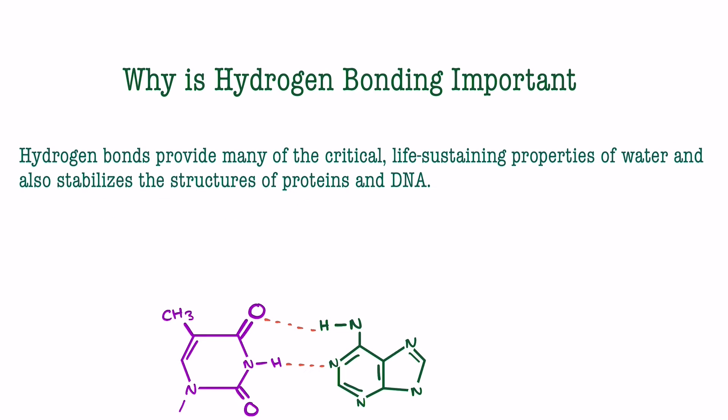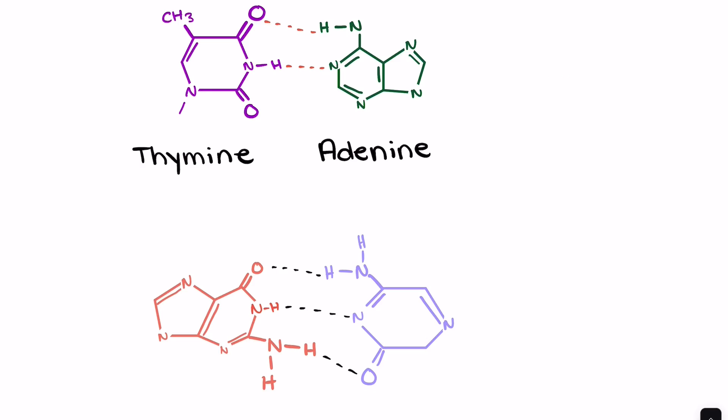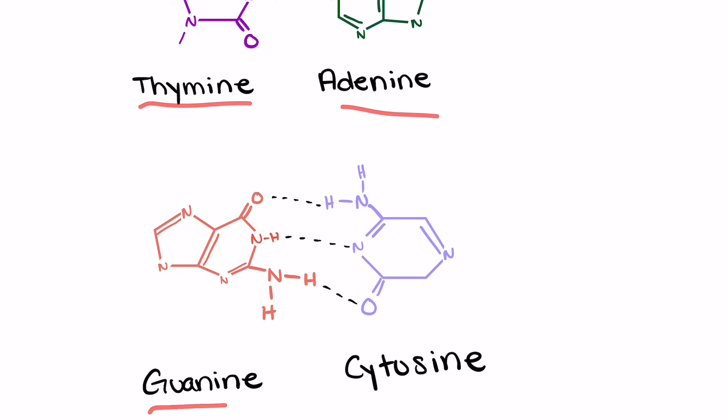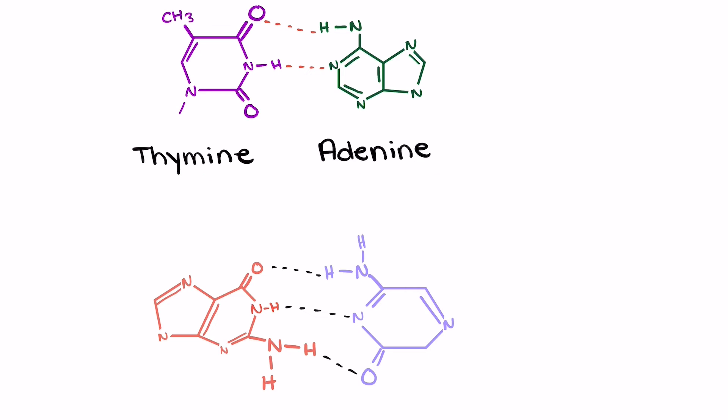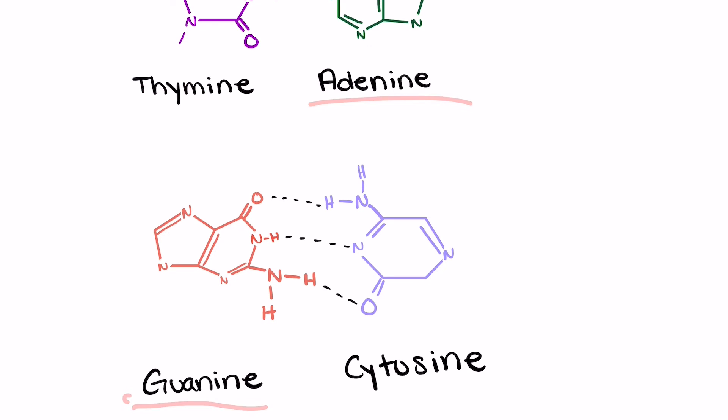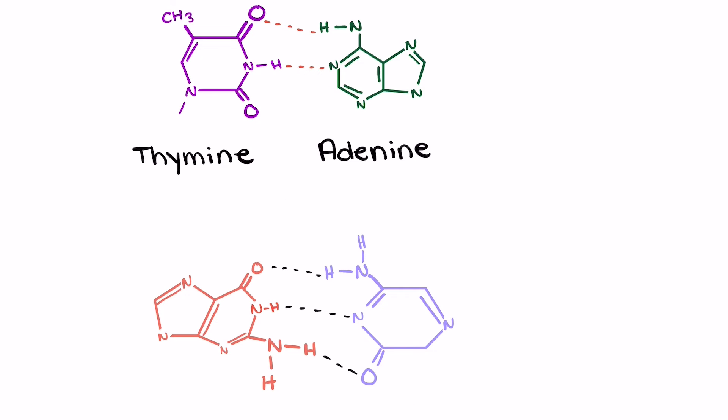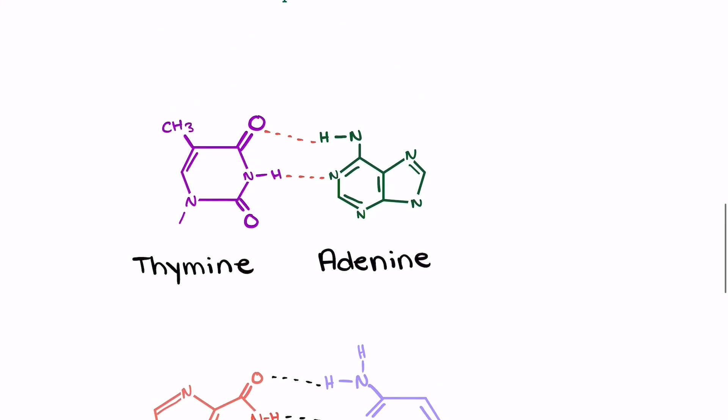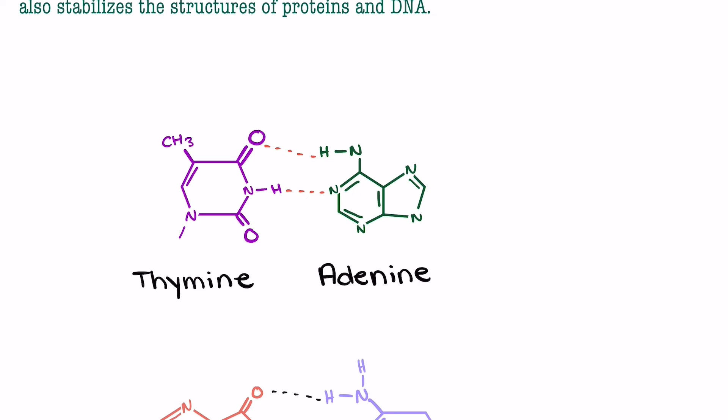So you may have heard at this point, maybe in a biology class, that the bases for DNA are thymine, adenine, guanine, and cytosine, and that thymine always pairs with adenine and guanine always pairs with cytosine. But why is that? You know, you always hear that T pairs with A and G pairs with C, but why? So I've drawn out the structures of each of the bases.